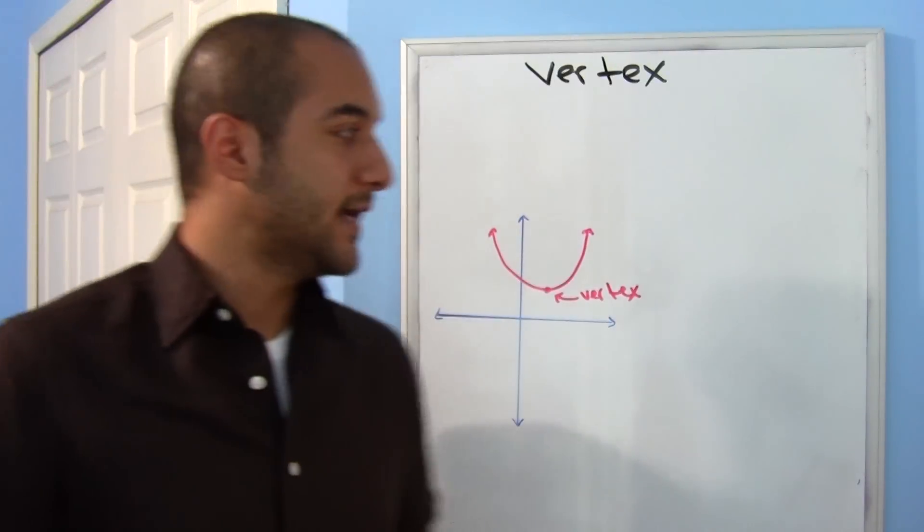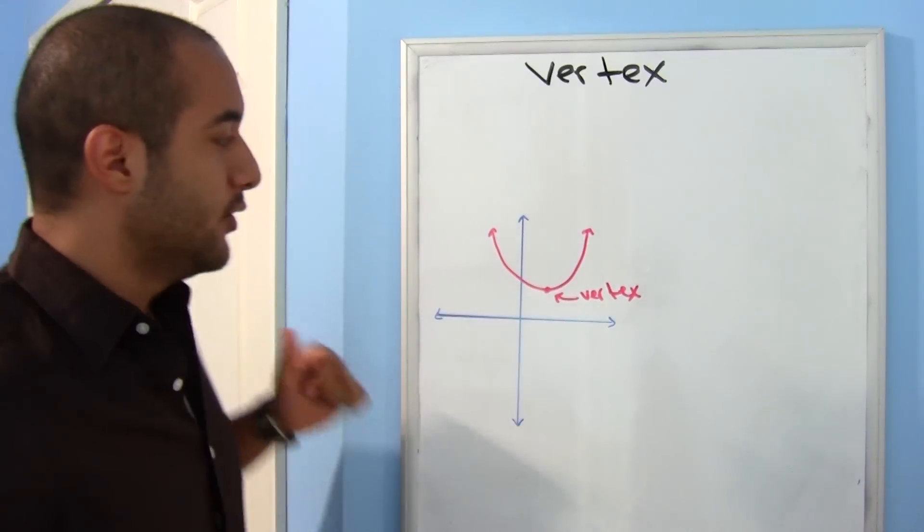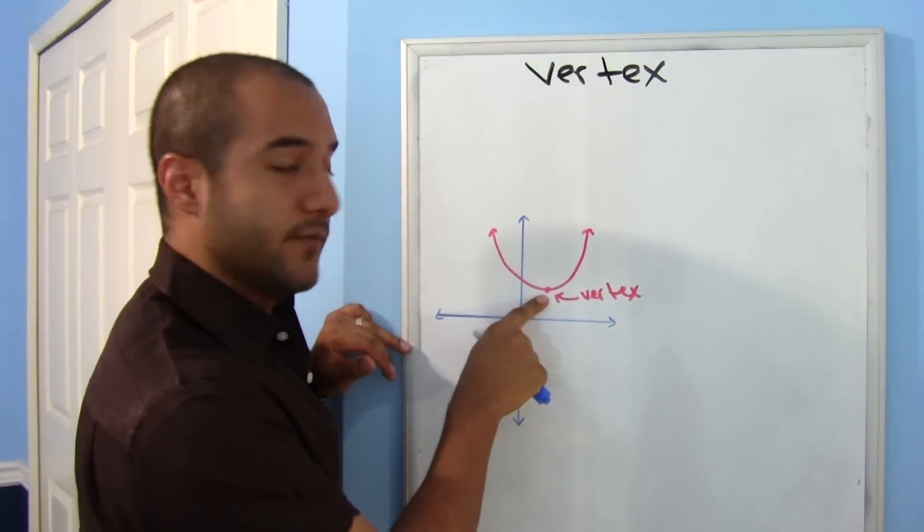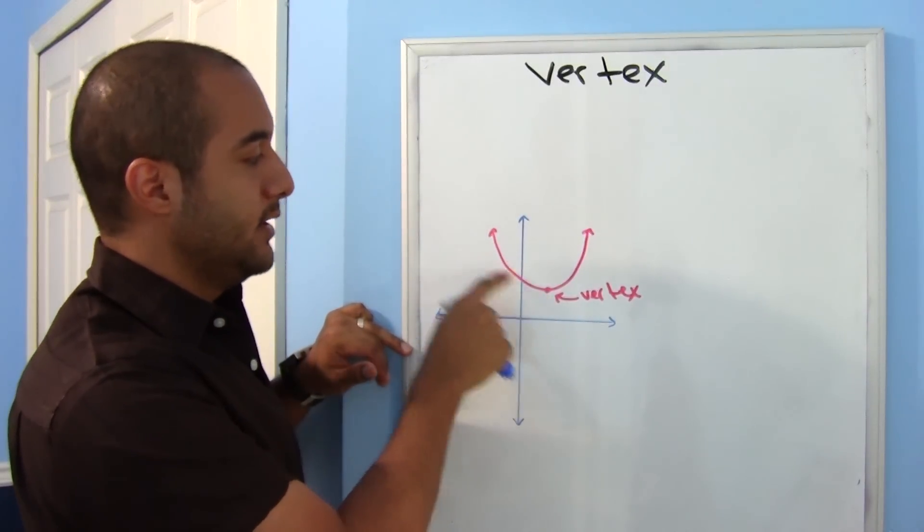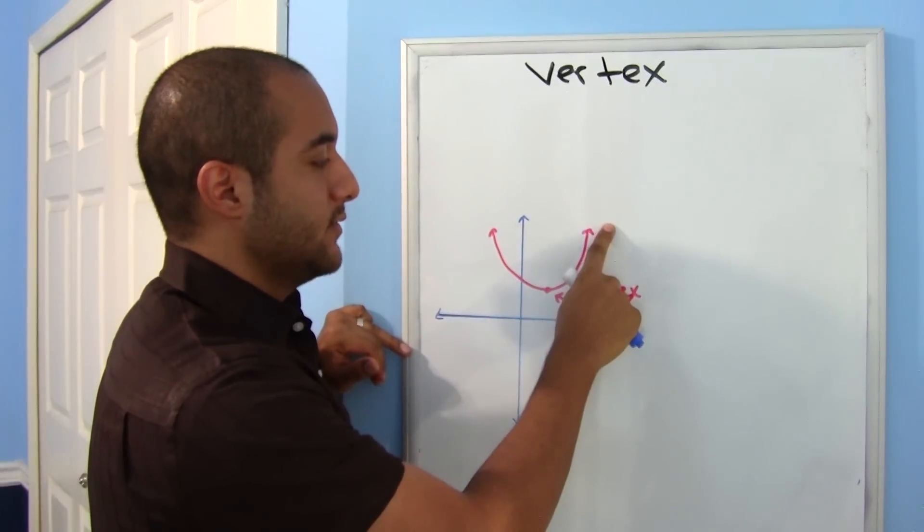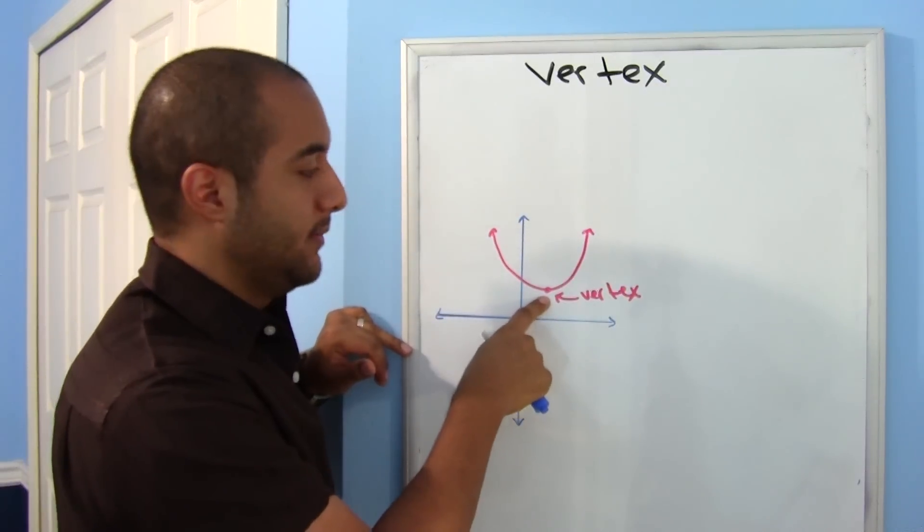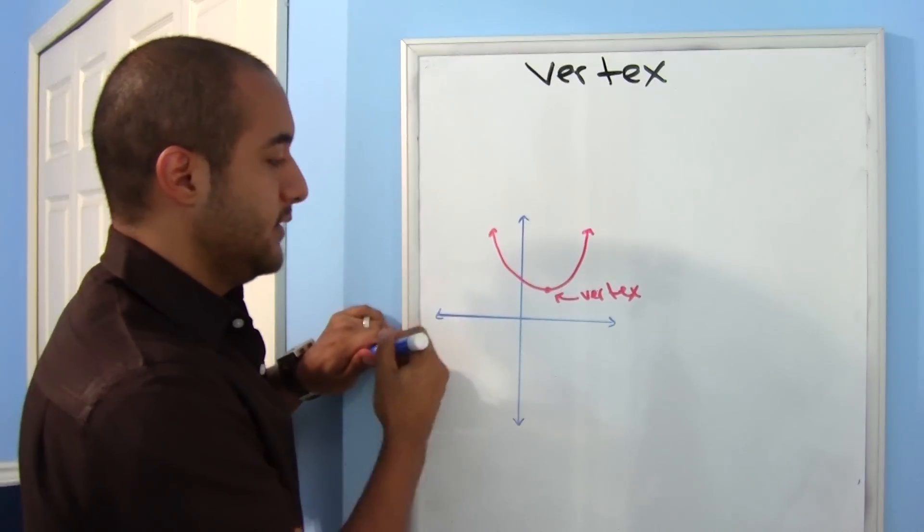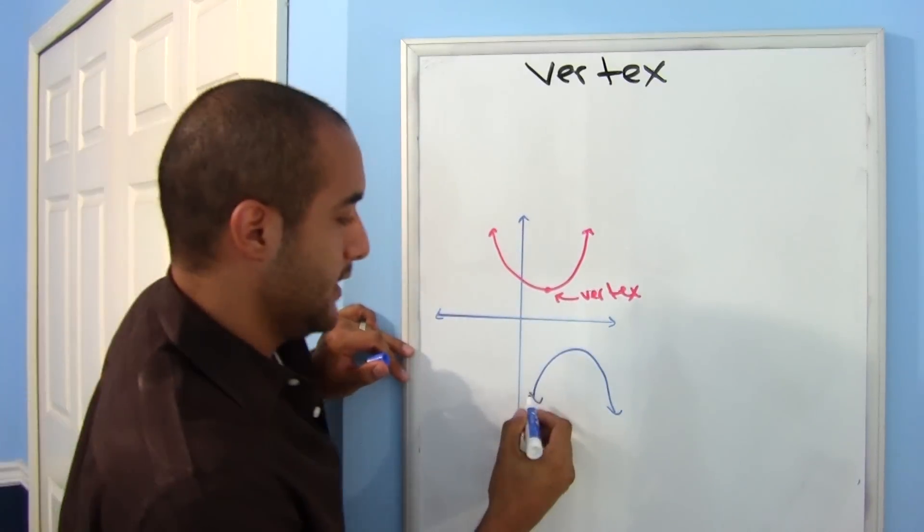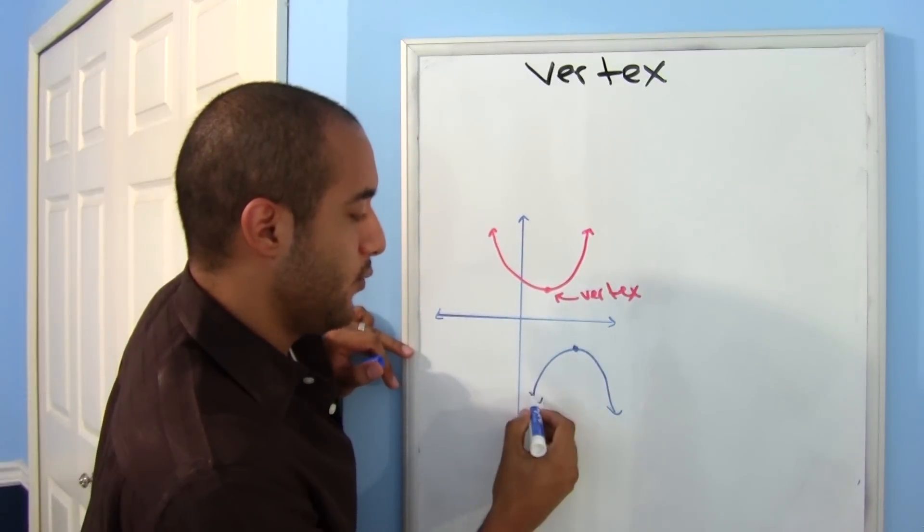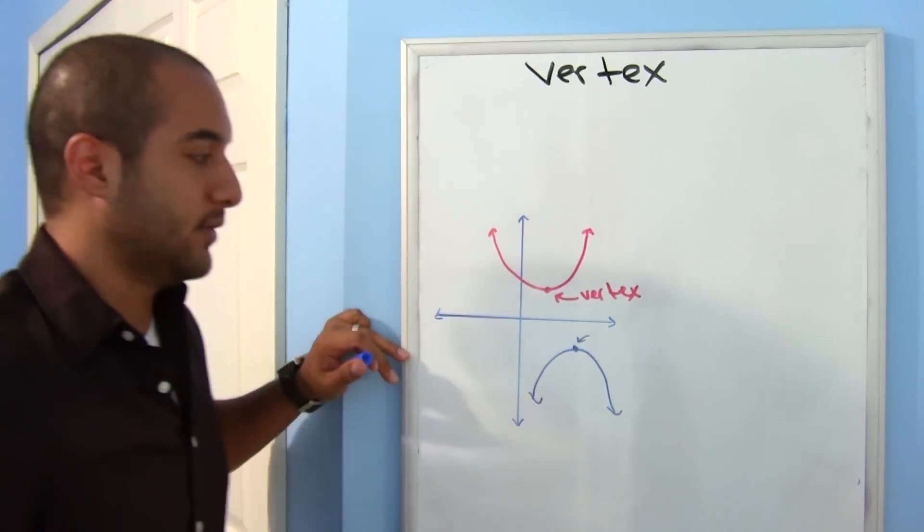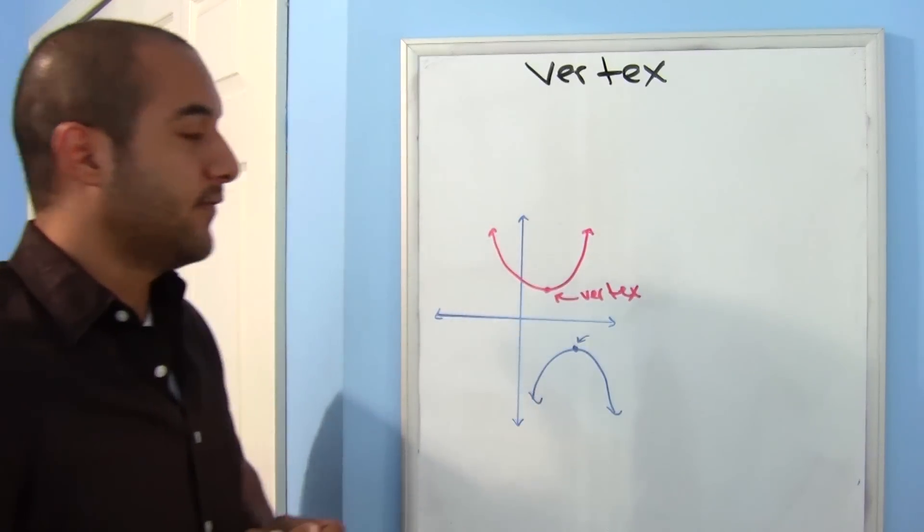Alright, so finding the vertex is actually very important for a parabola. Notice that in this parabola, if we knew the vertex, we know the exact point where it stops decreasing and begins to increase. So in this case, this vertex would be a minimum. Even if it looked the other way, if it was going like this, in this parabola, once again, the vertex will tell you where it stops increasing and begins to decrease. And this will be our maximum. So finding the vertex is very important.